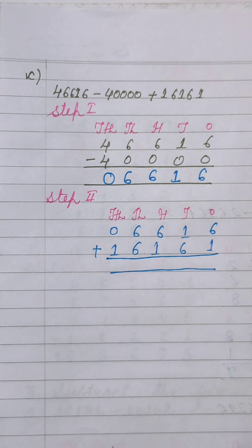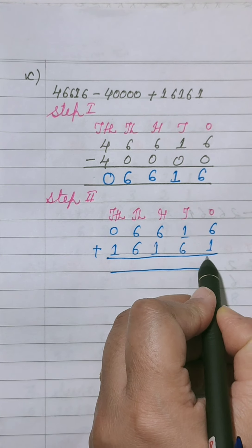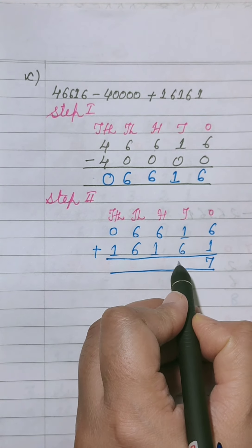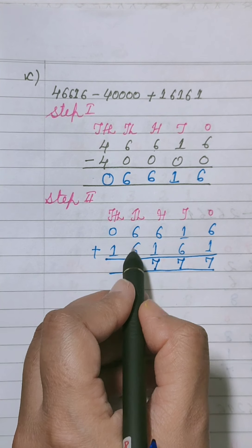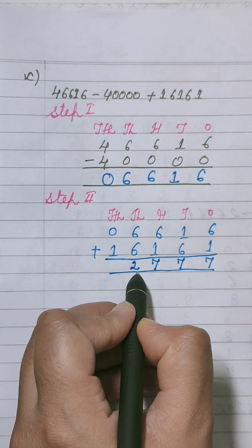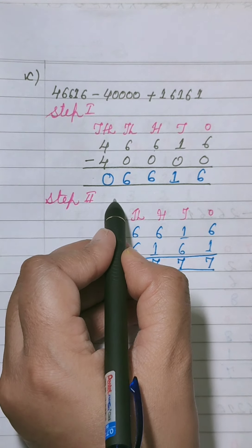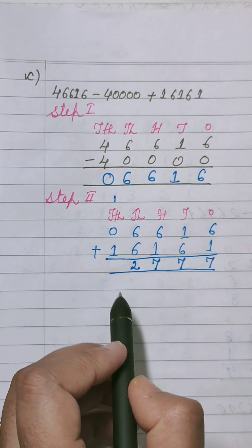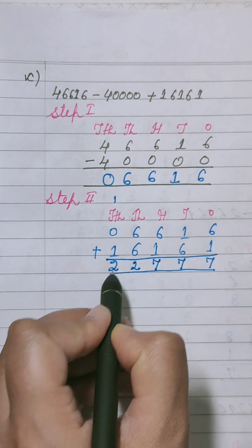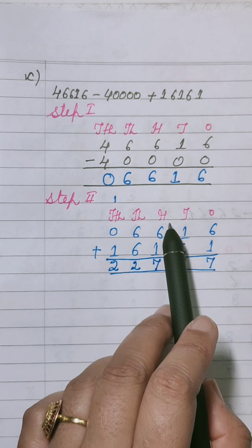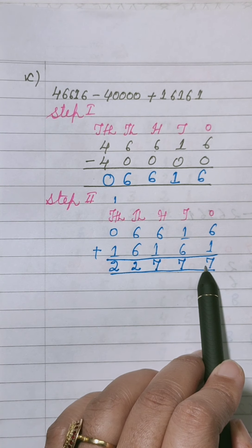Now we will add these values: 6 plus 1 is 7, 1 plus 6 again is 7, 6 plus 1 is 7 again, 6 plus 6 is 12 का 2 will be placed here. One will carry over 10,000's place. 0 plus 1 is 1, plus 1 is 2. So answer is 22,777.